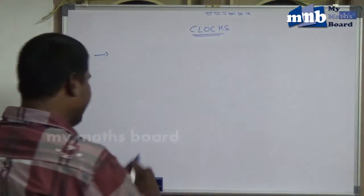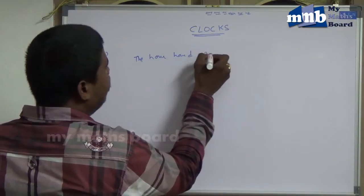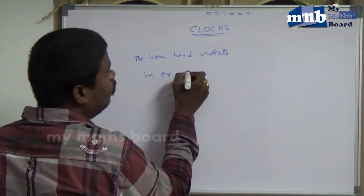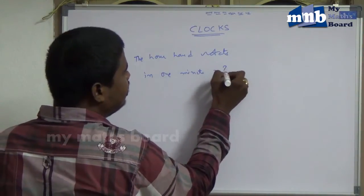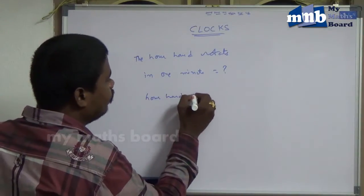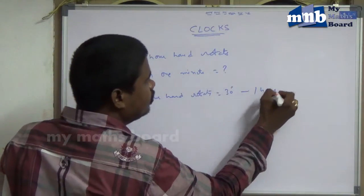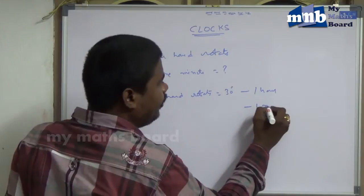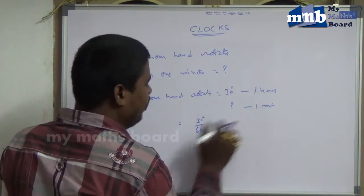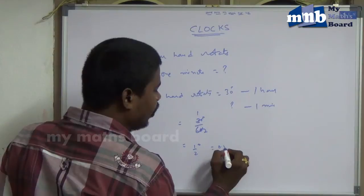Next, how much does the hour hand rotate in one minute? The hour hand rotates 30 degrees in one hour. So in one minute, that is 30 degrees divided by 60, which equals one half degree — 0.5 degrees.